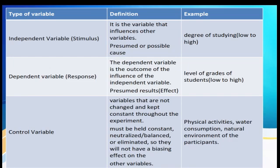Next is control variable. These are the variables that are not changed and are kept constant throughout the experiment. They must be held constant, neutralized, balanced, or eliminated so they will not have a biasing effect on the other variables. Examples: physical activities, water consumption, and the natural environment of the participants.